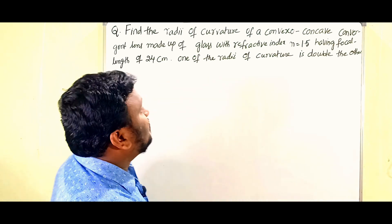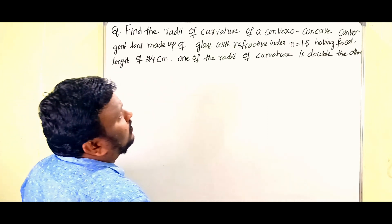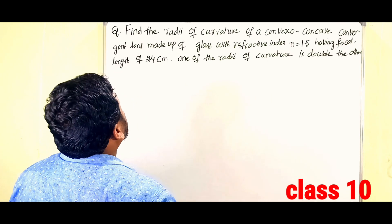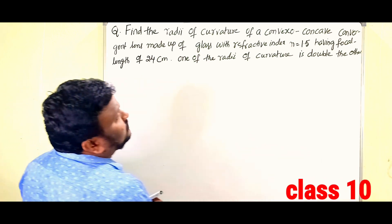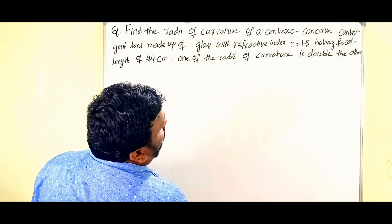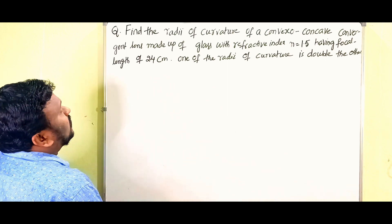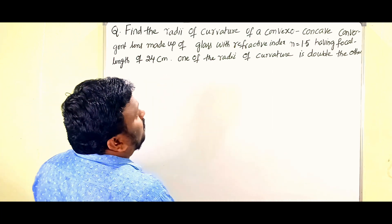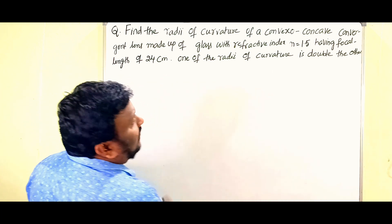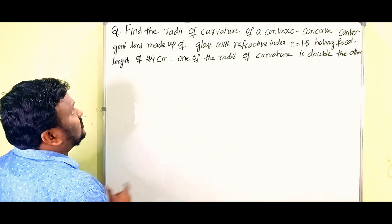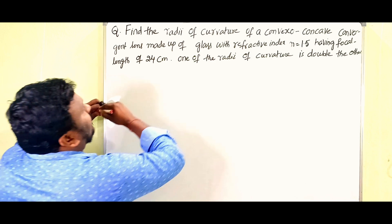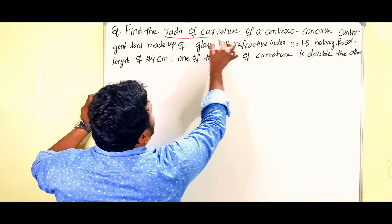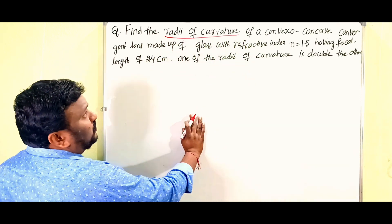Here the problem is: find the radii of curvature of a convex-concave convergent lens made up of glass with refractive index n = 1.5 having focal length of 24 centimeters. One of the radii of curvature is double the other. First, what we have to find out — we have to find out r1 and r2.